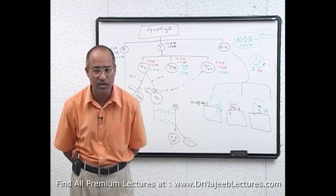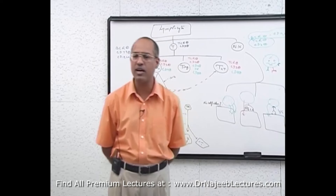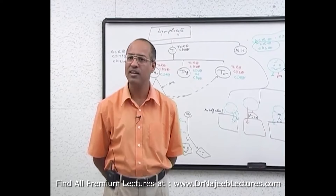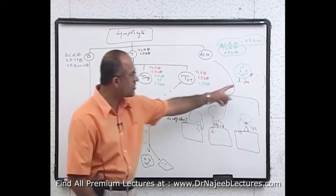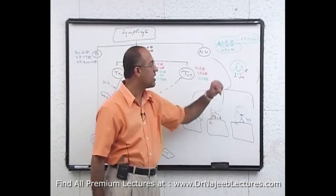Natural killer cells do not have B cell surface markers such as BCR, CD79, or CD19/20/21, nor do they have T cell surface markers such as TCR or CD3. Instead, they have non-specific receptors: one type recognizes self class I, a second recognizes MICA protein, and a third recognizes IgG.